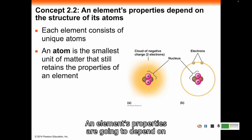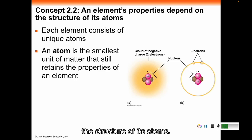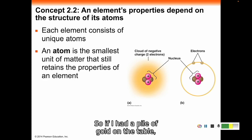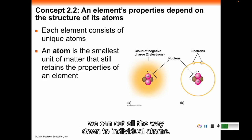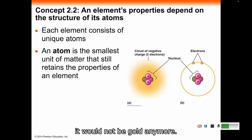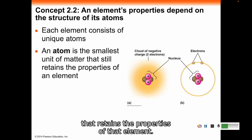An element's properties depend on the structure of its atoms. Each element is made of unique atoms. An atom is the smallest unit of matter that still retains the properties of an element. If I had a pile of gold, I could cut it in half and it would still be gold. I could keep cutting that pile all the way down until we were down to individual atoms. It would still be gold. But if we tried to cut it down anymore, it would not be gold anymore. The atom is the smallest unit of matter that retains the properties of that element.